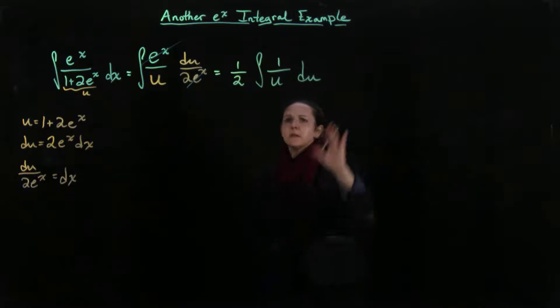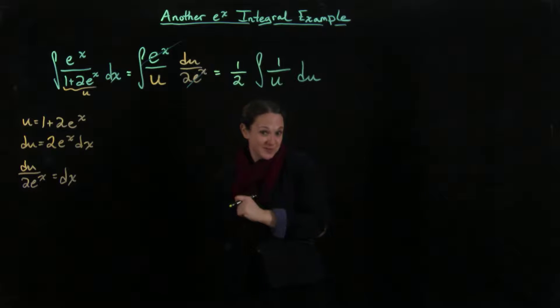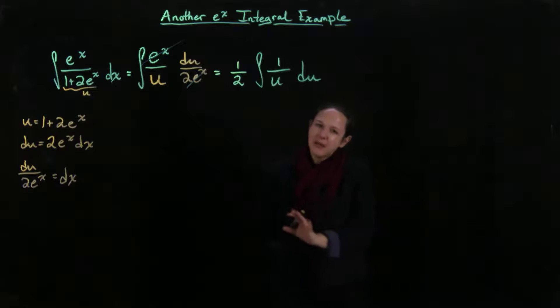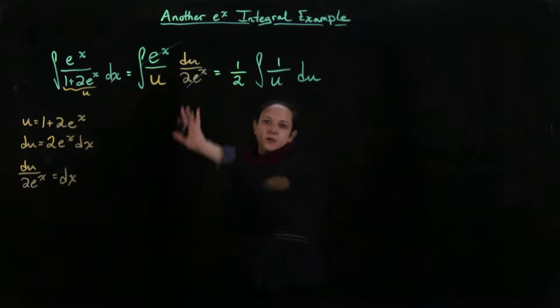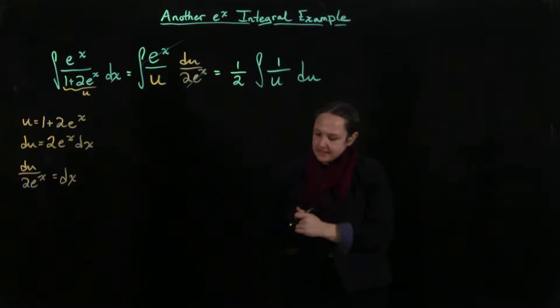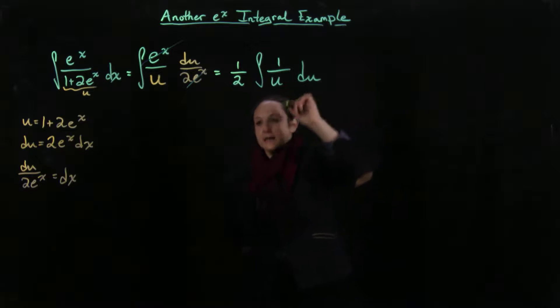Now I have an integral that's entirely in terms of u, and so I can go ahead and integrate. But we have to remember, because we don't have bounds in our original integrals in terms of x, we do need to put it back in terms of x at the end.